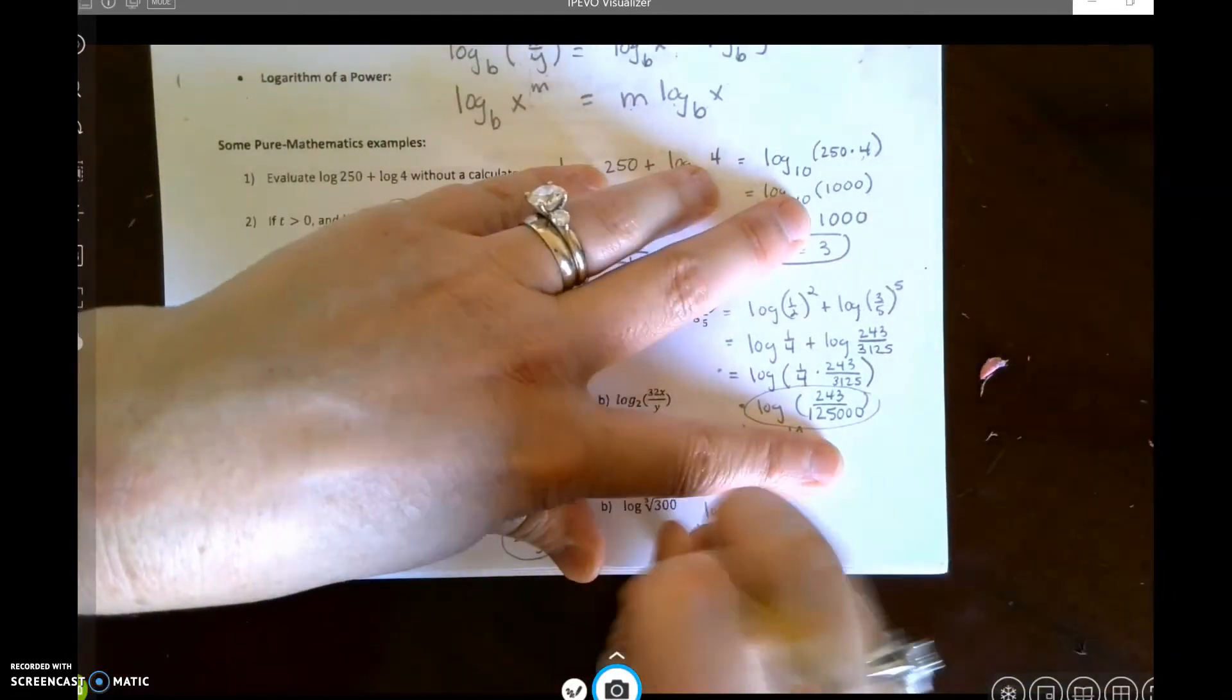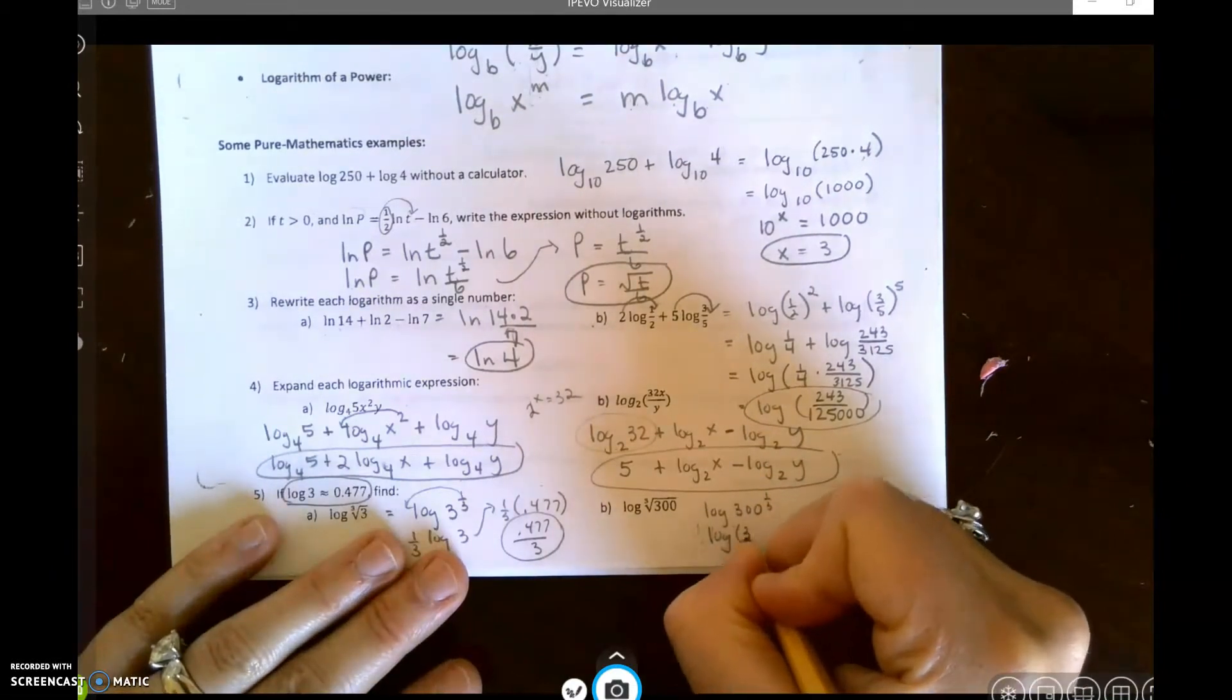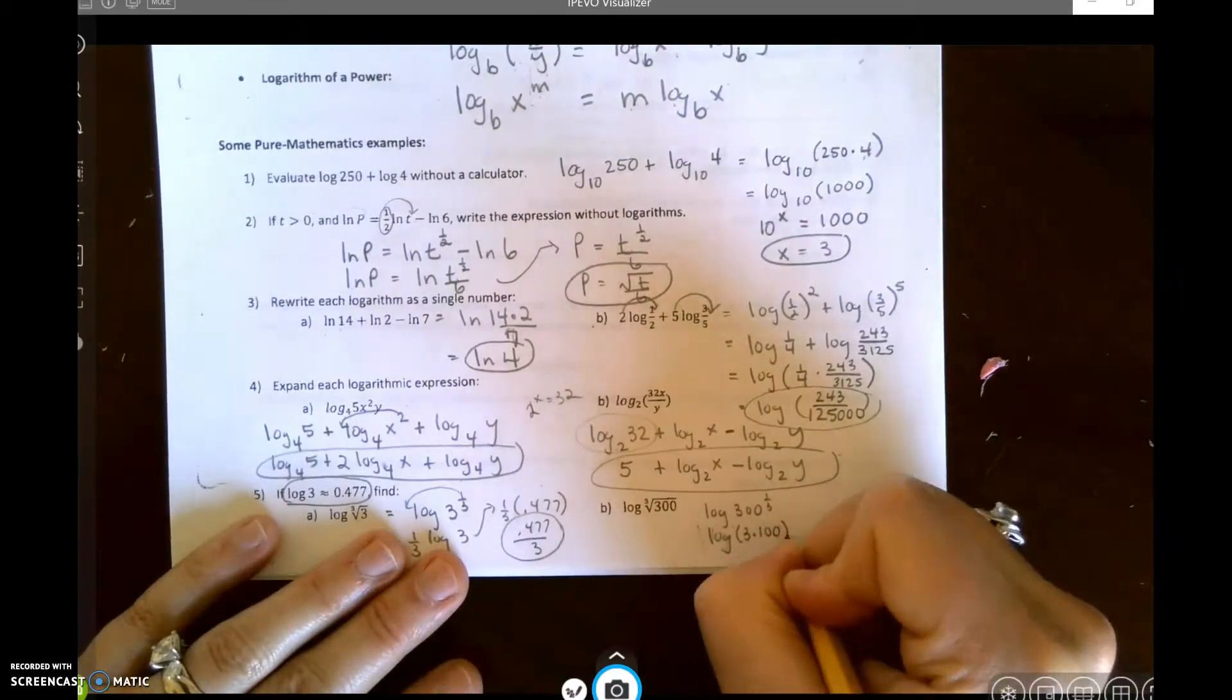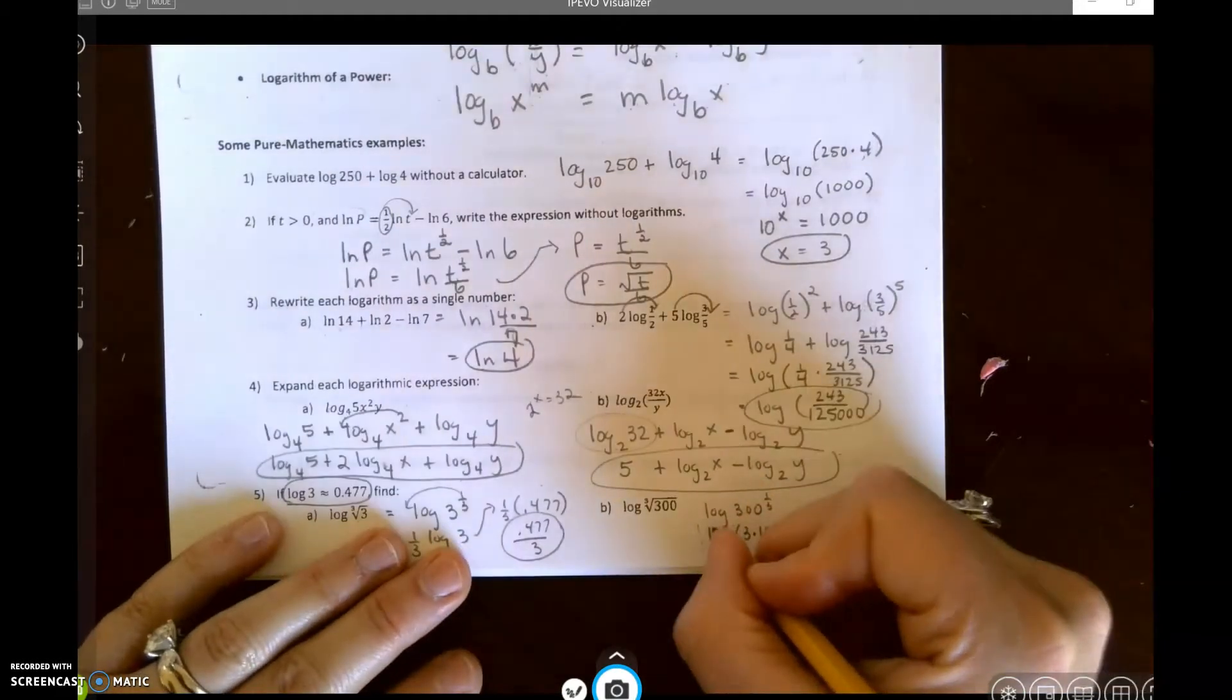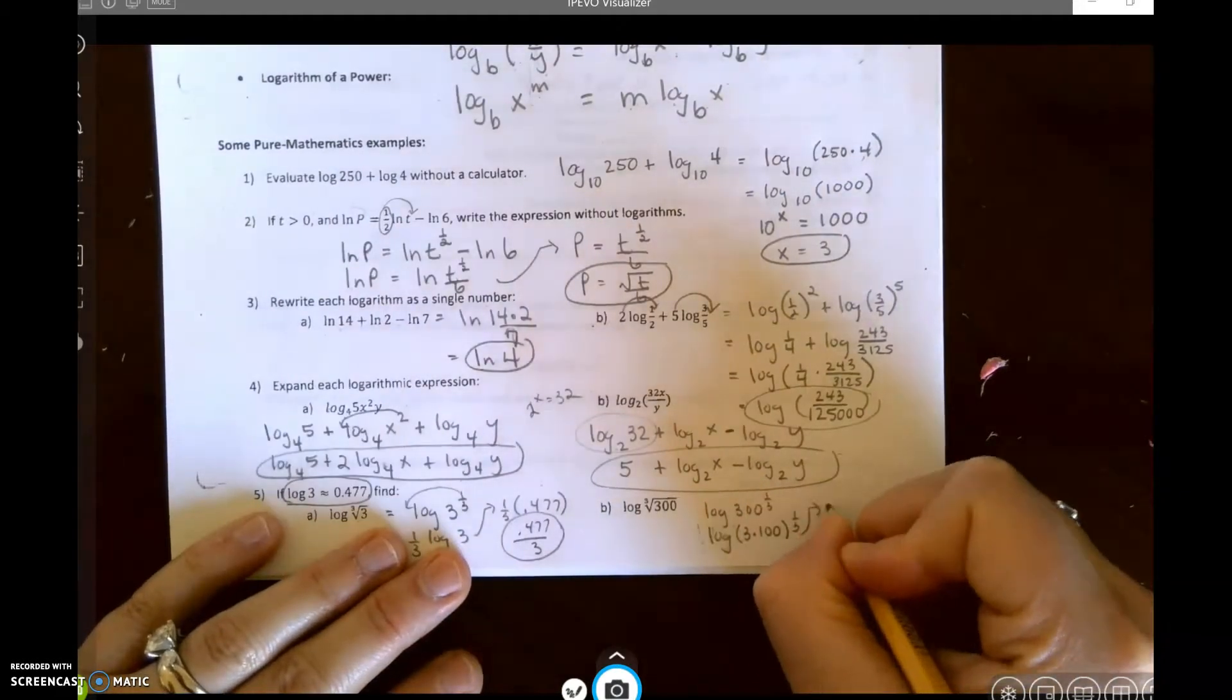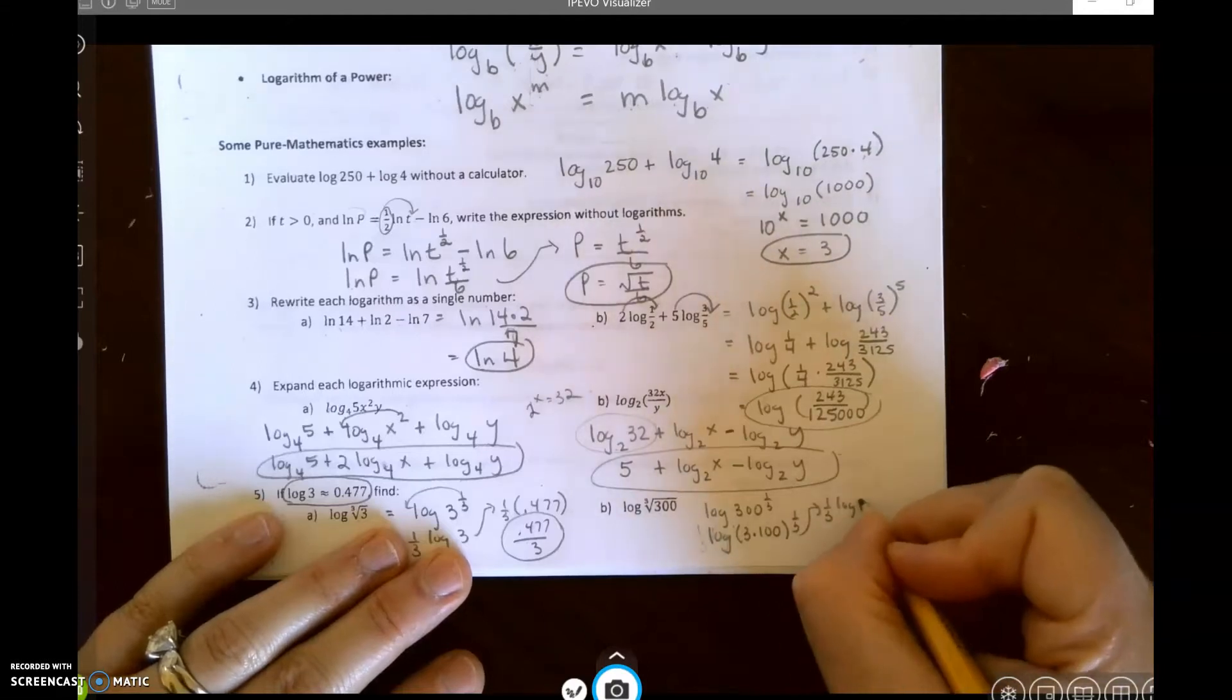Well, actually before I do that, I'm going to rewrite this 300 as 3 times 100.